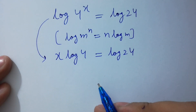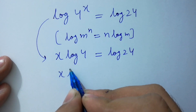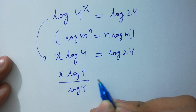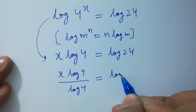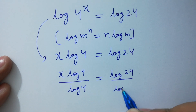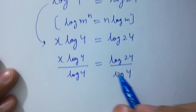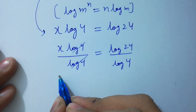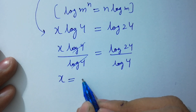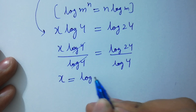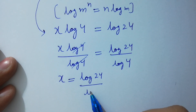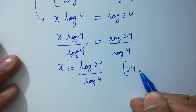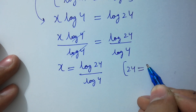Divide on both sides by log 4 to simplify it faster. Log 4 and log 4 will be cancelled. We have x equal to log 24 over log 4.